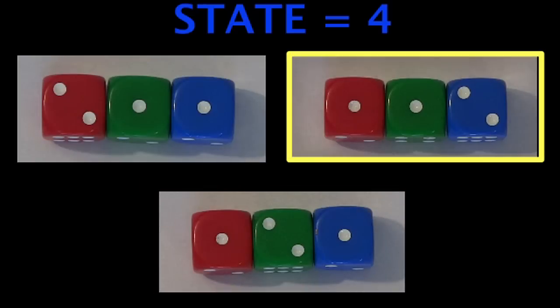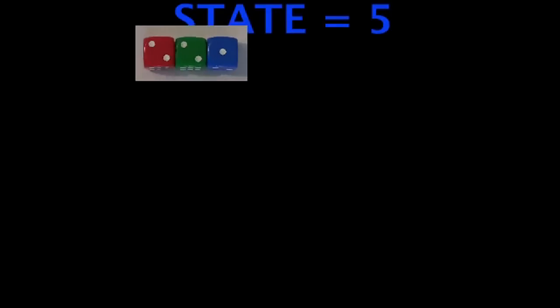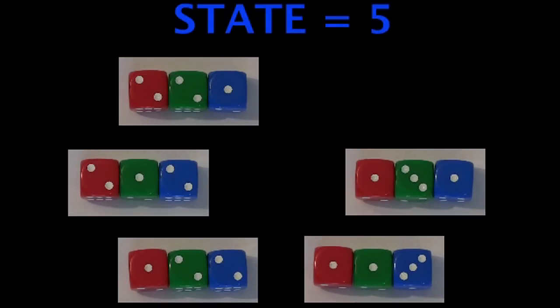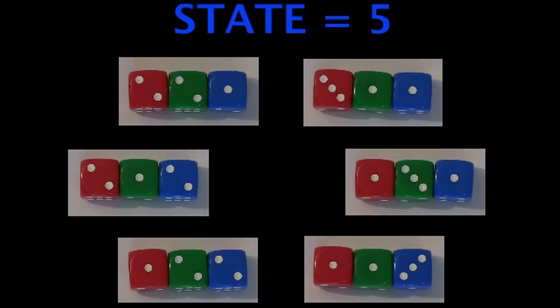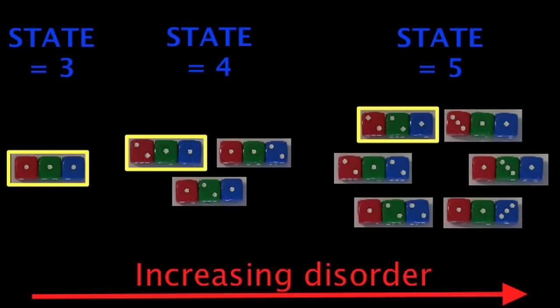Now there are six combinations of the dice that result in the state 5. This state has less order than the previous state because the dice could be in any of these six options and the state would still be 5. This example illustrates the notion of disorder.